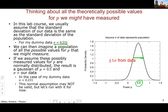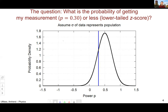In the context of all possible values for p that I might have measured, we can reframe our question: what is the probability of getting the measurement I got — 0.3 or less? This is known as a lower-tailed z-score. We want to know the probability of getting 0.3, represented by the blue line on our distribution of all possible theoretical values for the power, or less.